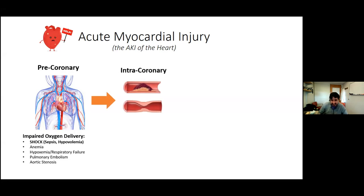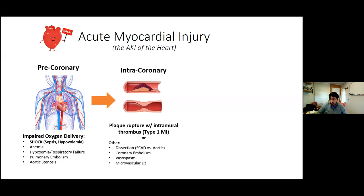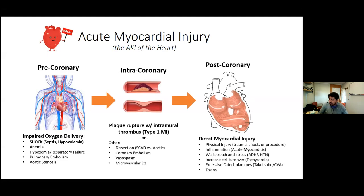Intracoronary pathology is what we really worry about — like intrinsic kidney disease in the AKI framework. Type 1 MI is the main concern, but other non-atherothrombotic processes in the artery also matter. Post-coronary causes involve direct injury to myocardium: physical injury, inflammation. Myocarditis elevates troponin; pericarditis alone does not — it must be perimyocarditis since troponin doesn't exist in pericardial cells. Stretch and stress from extremes of hypertension, volume overload, or tachycardia can cause troponin leakage even without decreased blood flow.